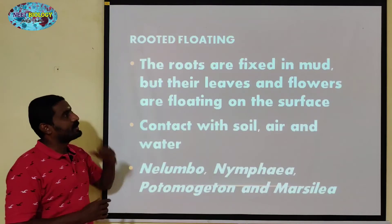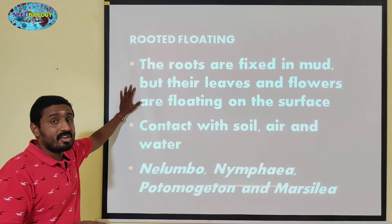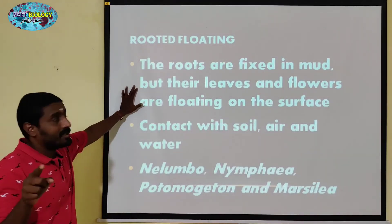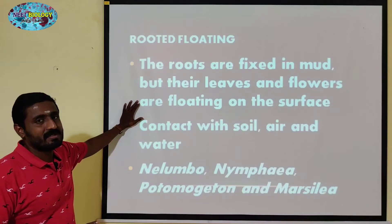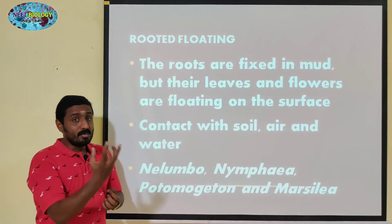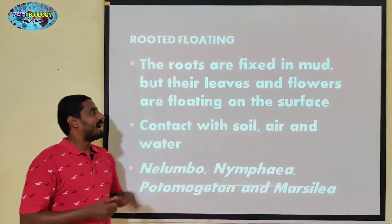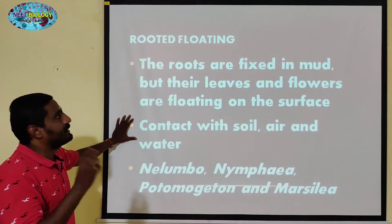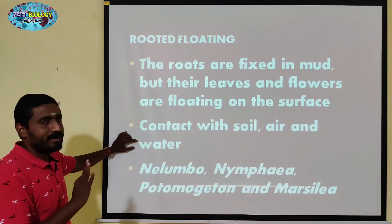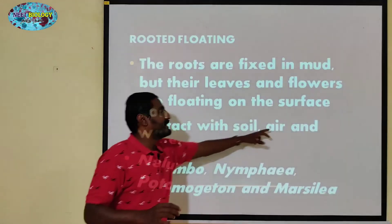Next one is Rooted Floating. The roots are fixed in mud — that is the soil. Those roots are attached, but their leaves and flowers are floating on the surface. For hydrophytes, there is contact with soil, air, and water. Roots are attached with soil, then leaves and flowers are in contact with air and water.